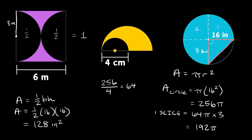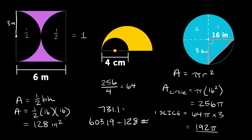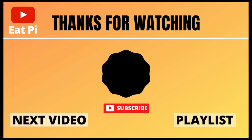The area of the three full slices is 192 pi, approximately 603.19. Add the triangle area of 128 to get a grand total of approximately 731.19 inches squared. If you found the video helpful, leave a thumbs up below, and if you have any other questions or want to see other examples, let me know in the comments. See you next time!